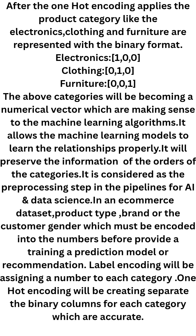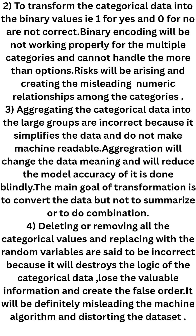Label encoding assigns a number to each category. One hot encoding creates separate binary columns for each category, which is more accurate. Simply transforming category data into binary values of one for yes and zero for no is not correct.